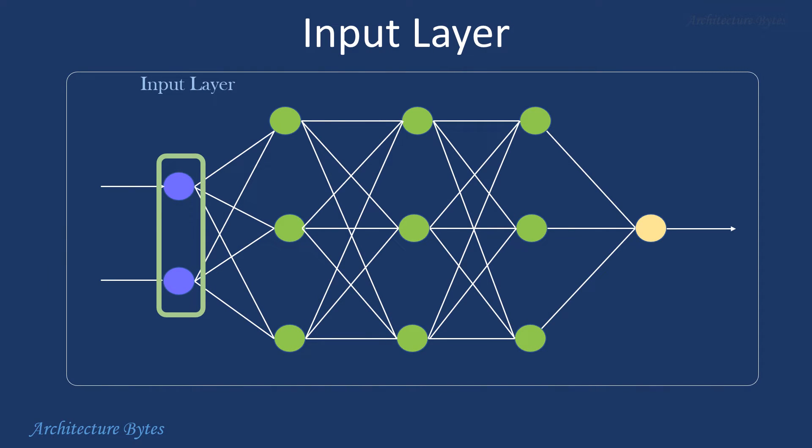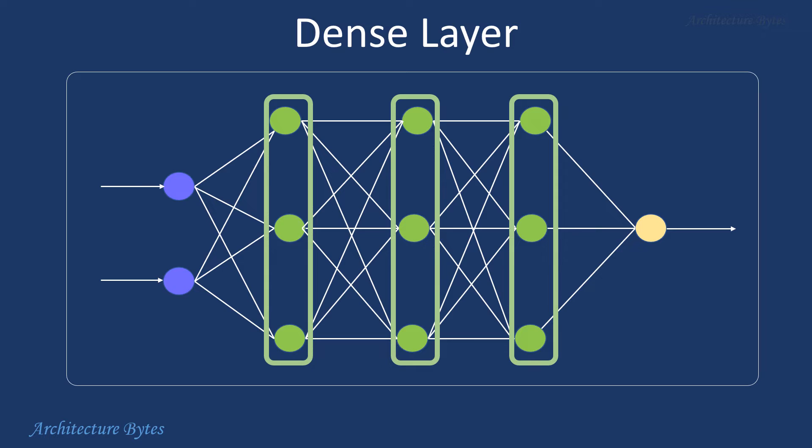Input layer is the first layer in a neural network which receives the raw input data. It simply passes the input to the subsequent layers and does not perform any computations. The number of neurons in this layer is determined by the dimensionality of the input data. In a layer of type dense, every neuron is connected to neurons in the previous and next layers. They are commonly used in feed-forward neural networks.